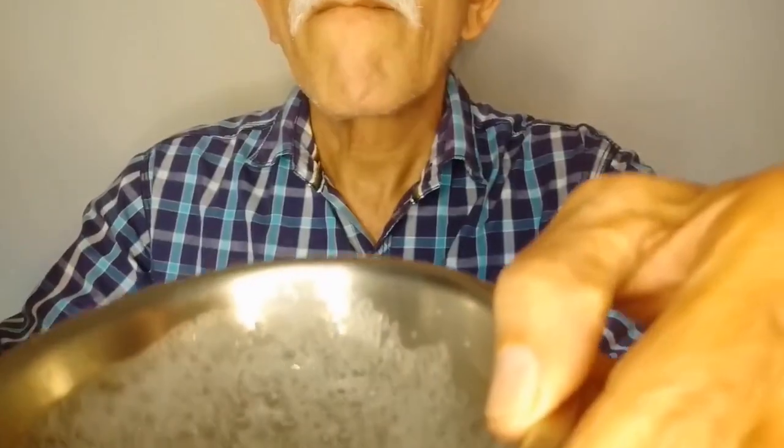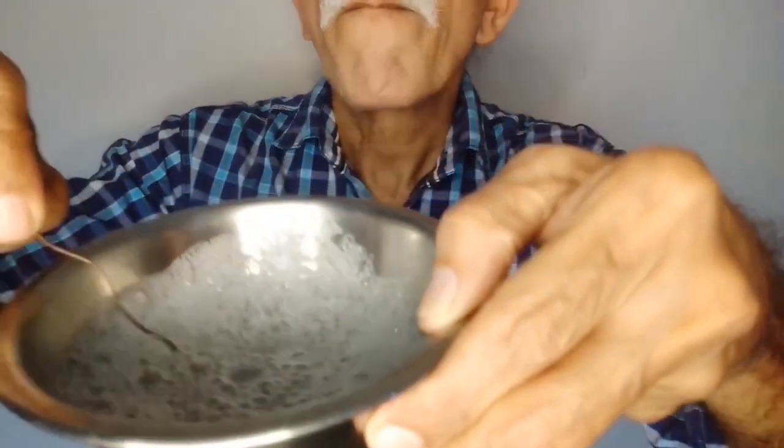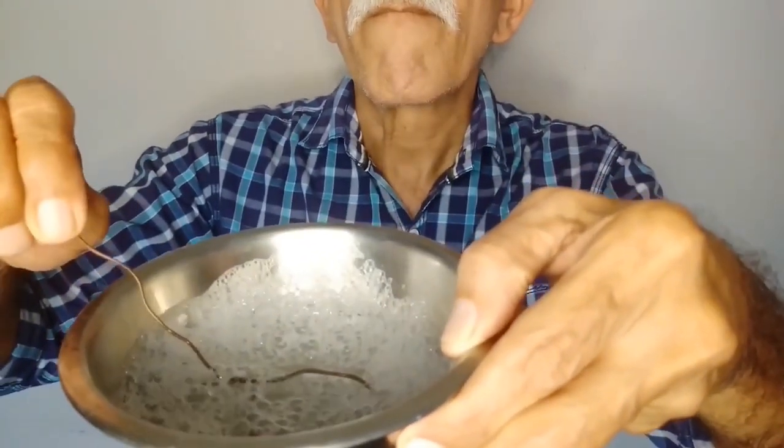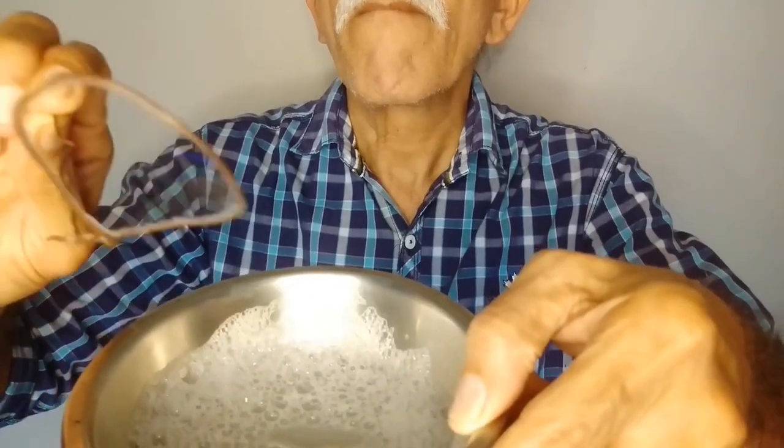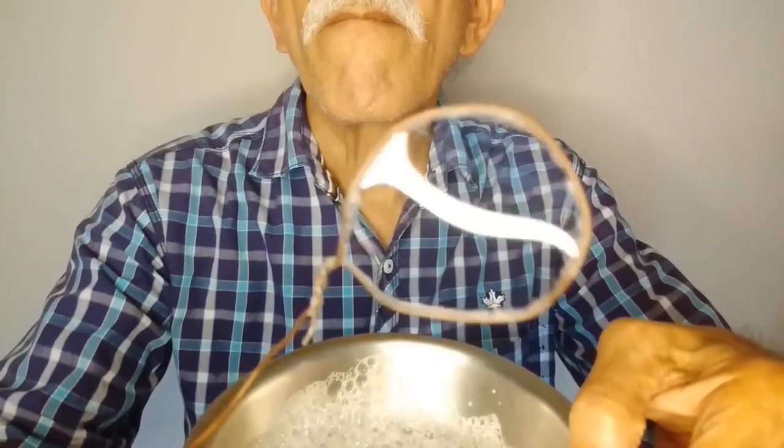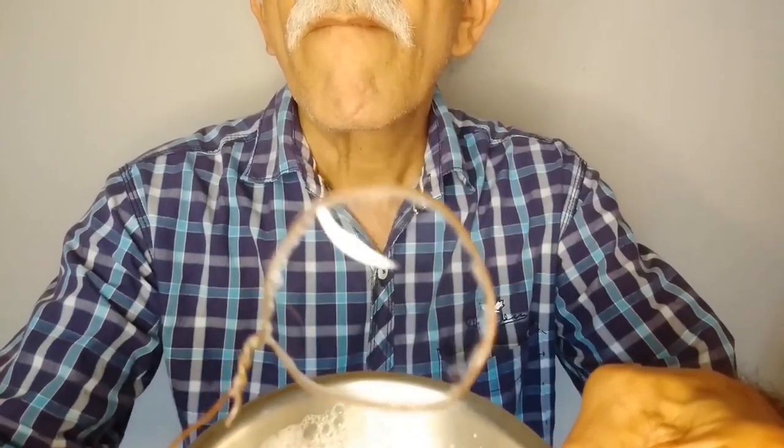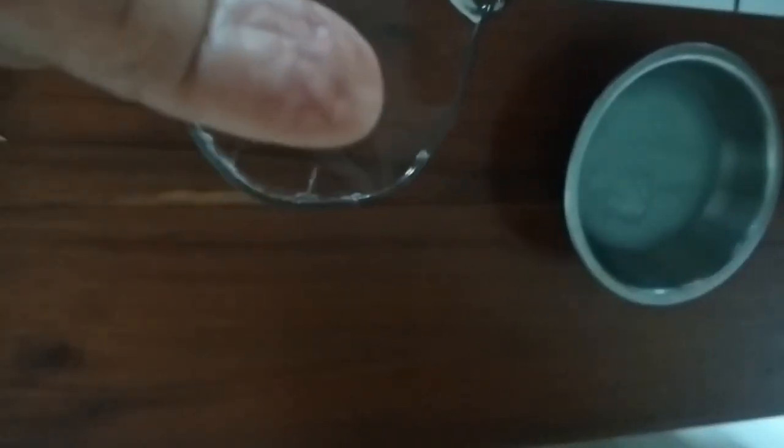Many times, most of us might have noticed the formation of thin soap film on a wire frame or something like that. This soap film acts like a stretched membrane which will always try to minimize the surface area, so that the total energy is a minimum. Here, we will perform a simple experiment to illustrate the properties of such a thin soap film.